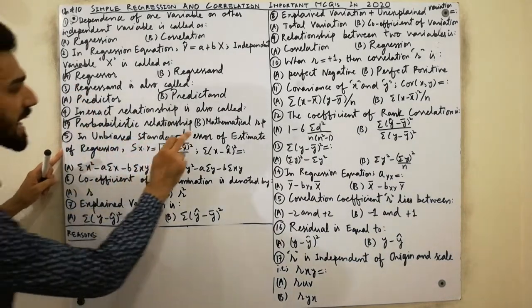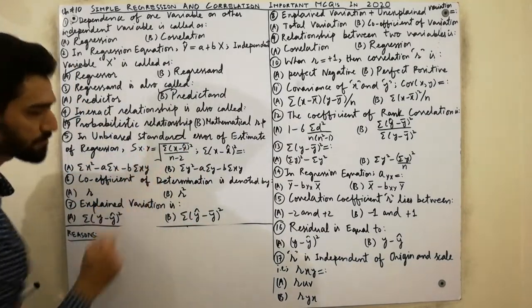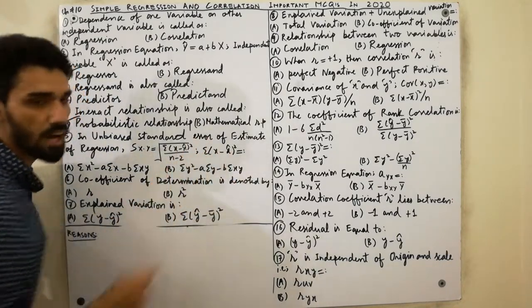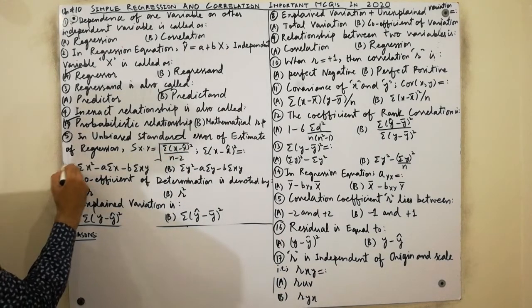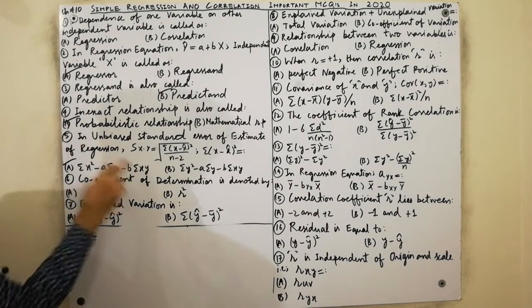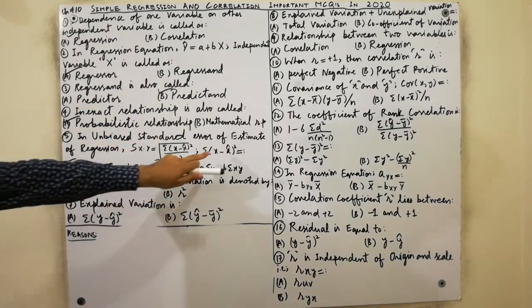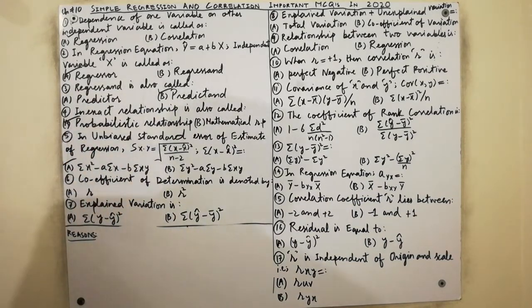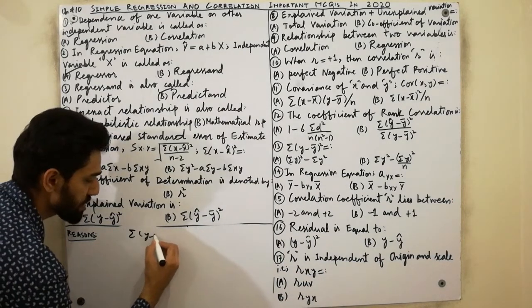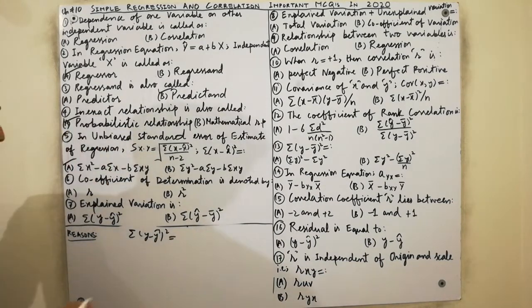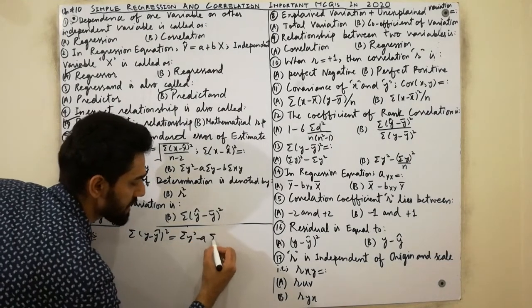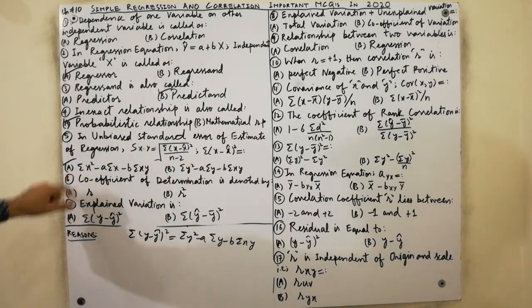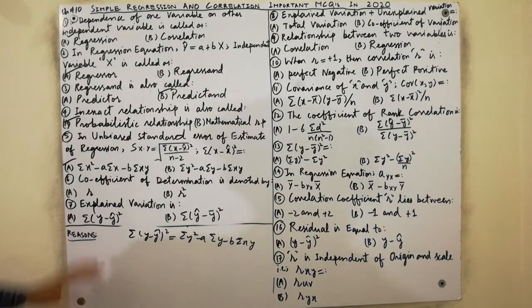MCQ 5 on standard error of estimate: the formula for Σ(Y − Ŷ)² is equal to ΣY² − AΣY − BΣX. Must remember that in the regression equation, Σ(Y − Ŷ)² = ΣY² − AΣY − BΣX. Similarly, Σ(X − X̄)² = ΣX² − AΣX − BΣX.